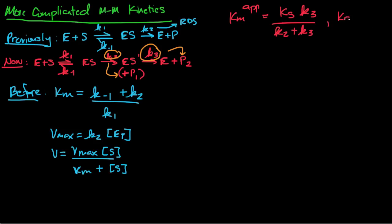So we have a Km apparent, and your Michaelis-Menten equation is going to be V equals Vmax times substrate concentration divided by Km apparent plus the concentration of S. In my opinion, the most important thing to look at is that now, when it comes to your Vmax, you don't just use K2 by default.